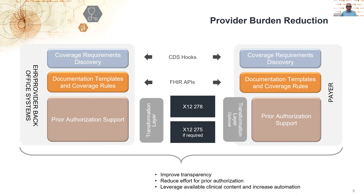Each of these guides can actually work on its own — that's why they're separate. Within the prior authorization support guide, that bundle of FHIR data and questionnaire response is transformed into an X12-278 message, because that's a HIPAA-mandated transaction, and sent to the payer who unpacks the information, can put it into their system for automated adjudication around their utilization management tools, and then sends the response back to the provider. That closes the loop in the ideal situation around prior authorization.